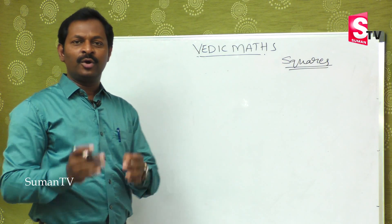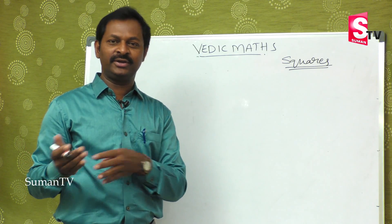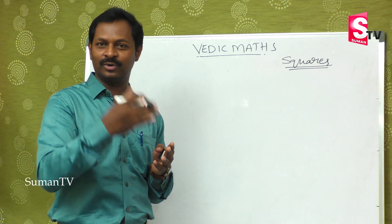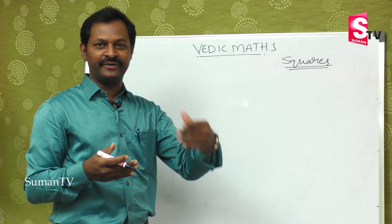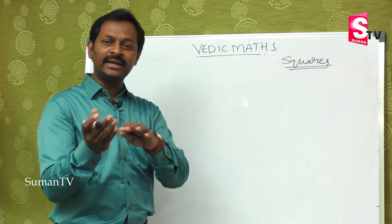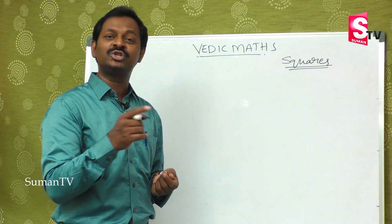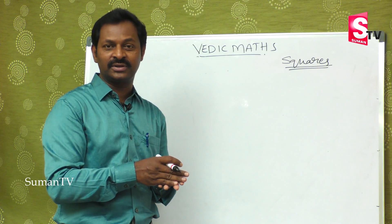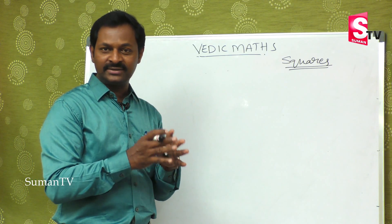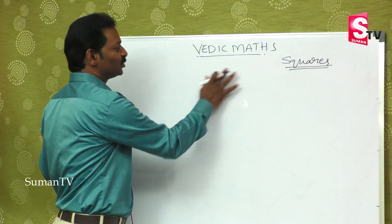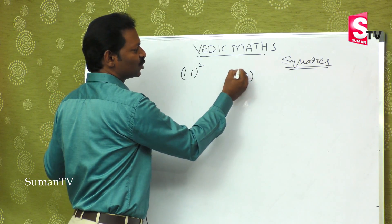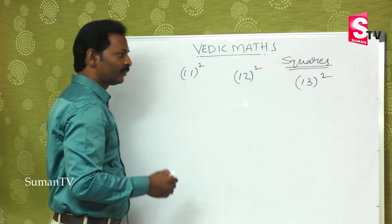Today we will cover squares of numbers starting from 11 — that is 11 square, 12 square, 13 square, 14 square, 15 square — all the way up to 19. And then we reverse: 19 reversed gives 91, 12 reversed gives 21, and so on. With the help of the balancing rule, we can easily find these squares.